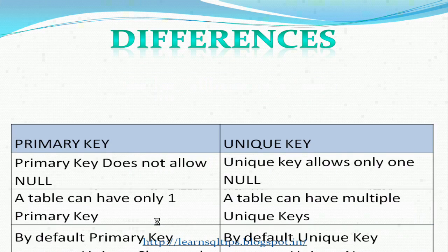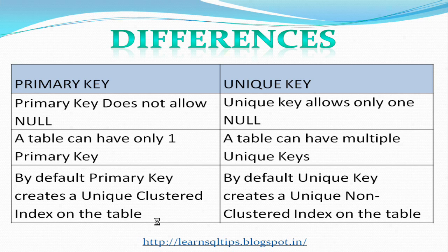Coming to the differences: a primary key doesn't allow nulls, whereas a unique key allows only one null. A table can have only one primary key, but a table can have multiple unique keys. By default, a primary key creates a clustered index, and by default a unique key creates a non-clustered unique index on the table.